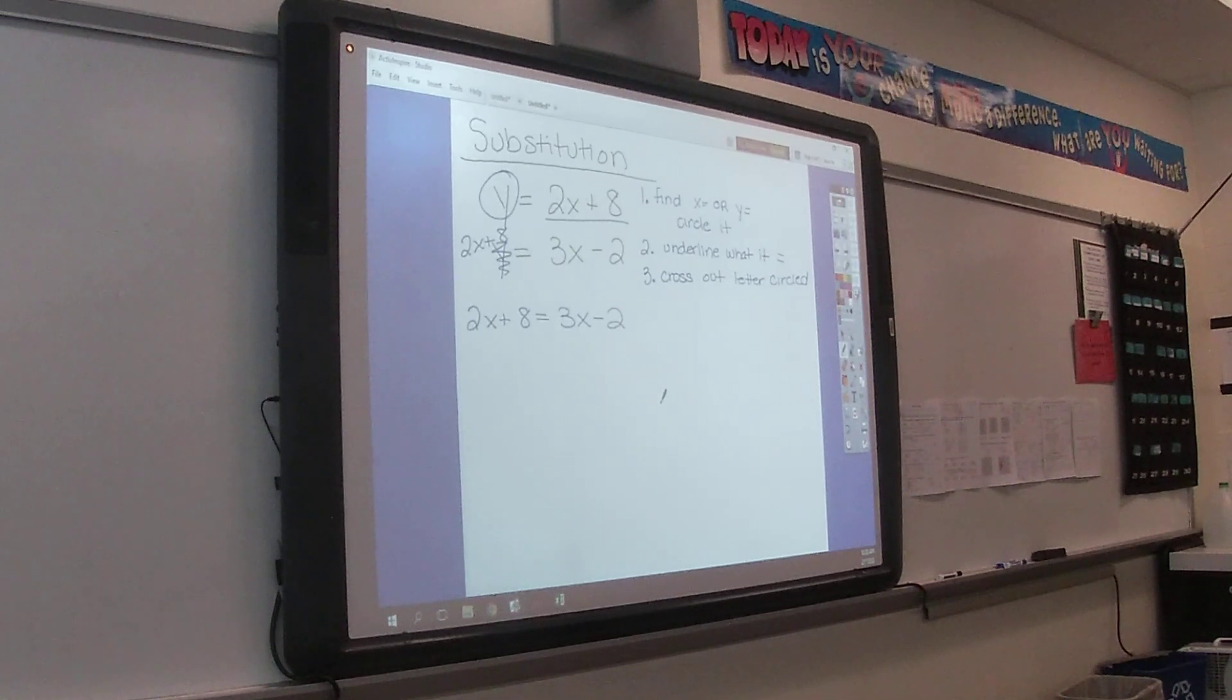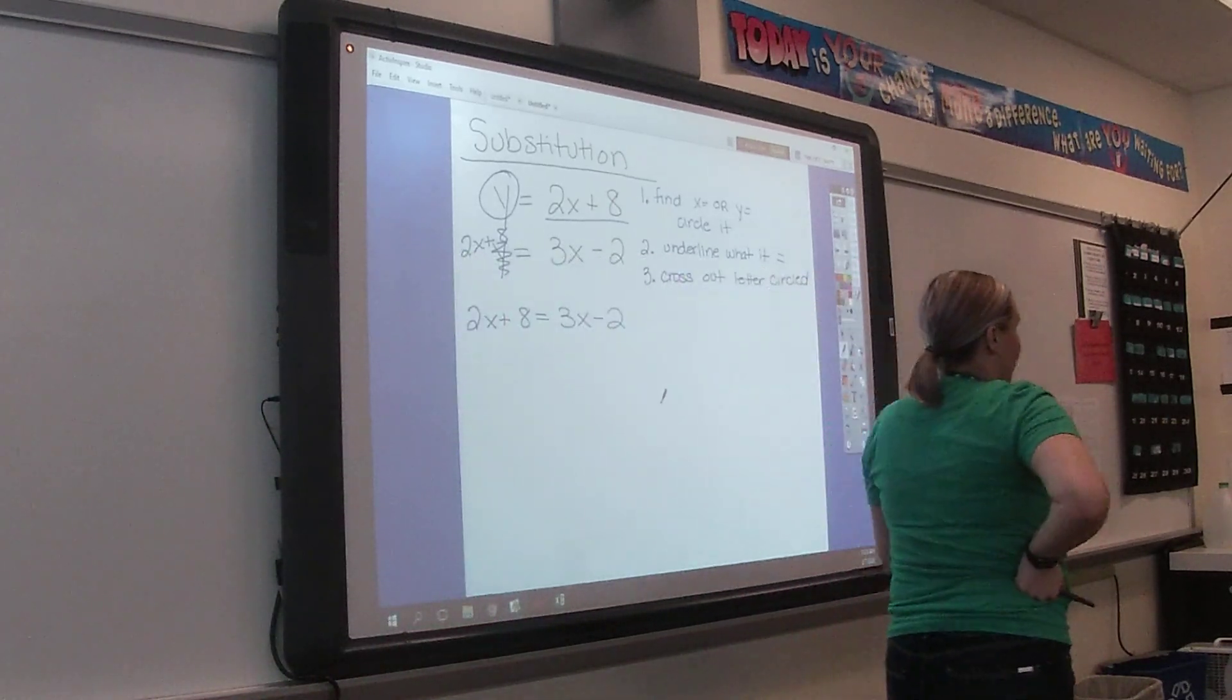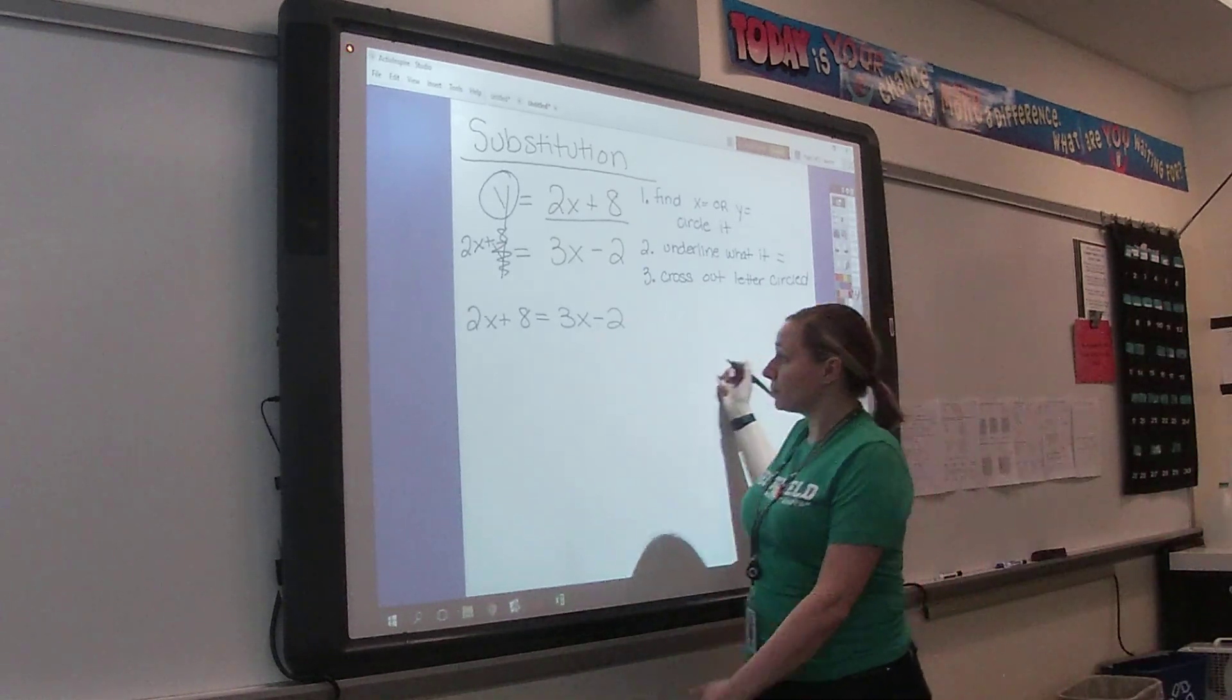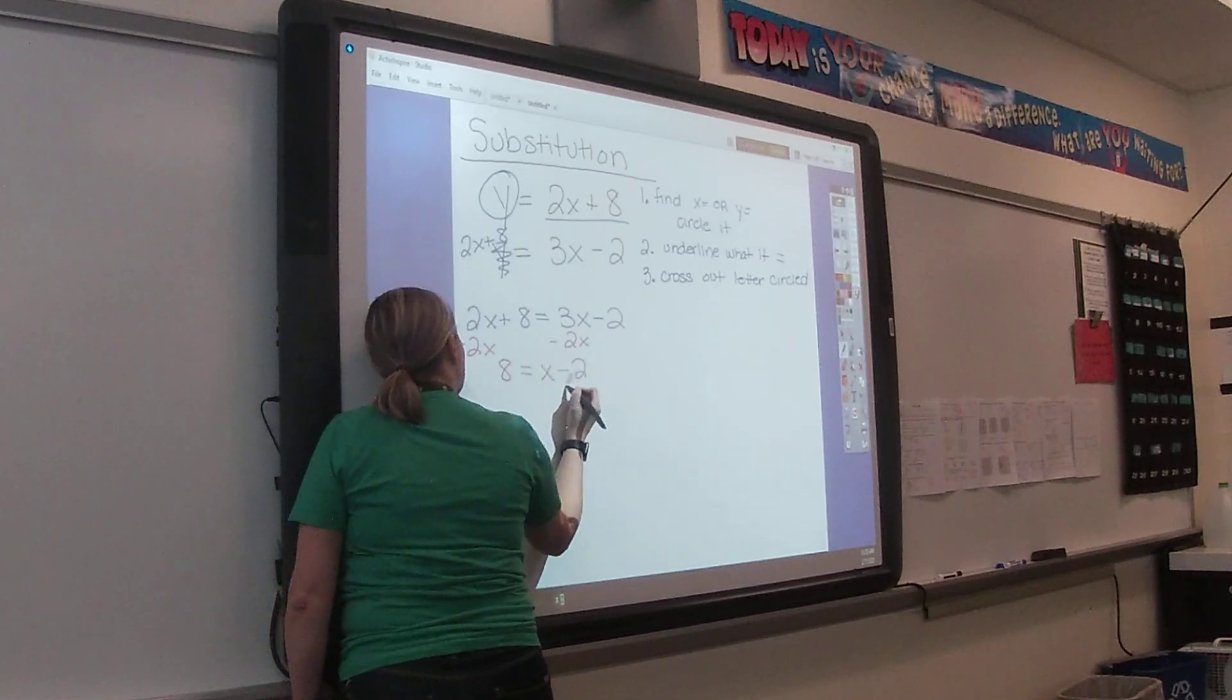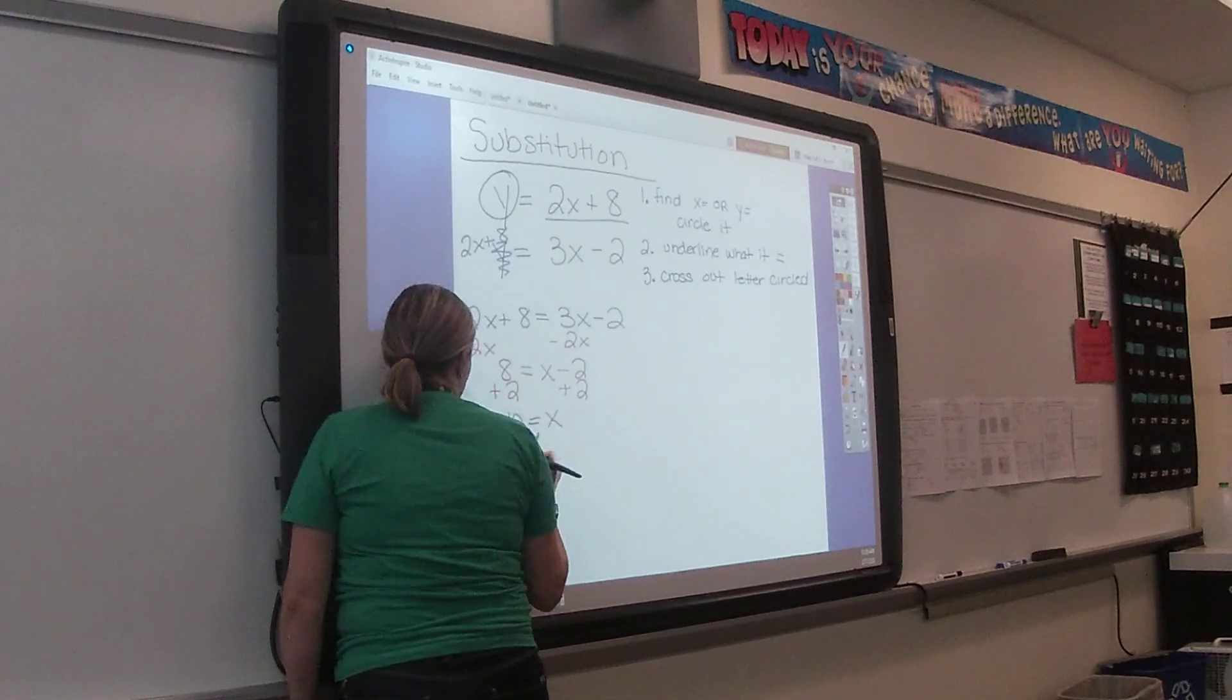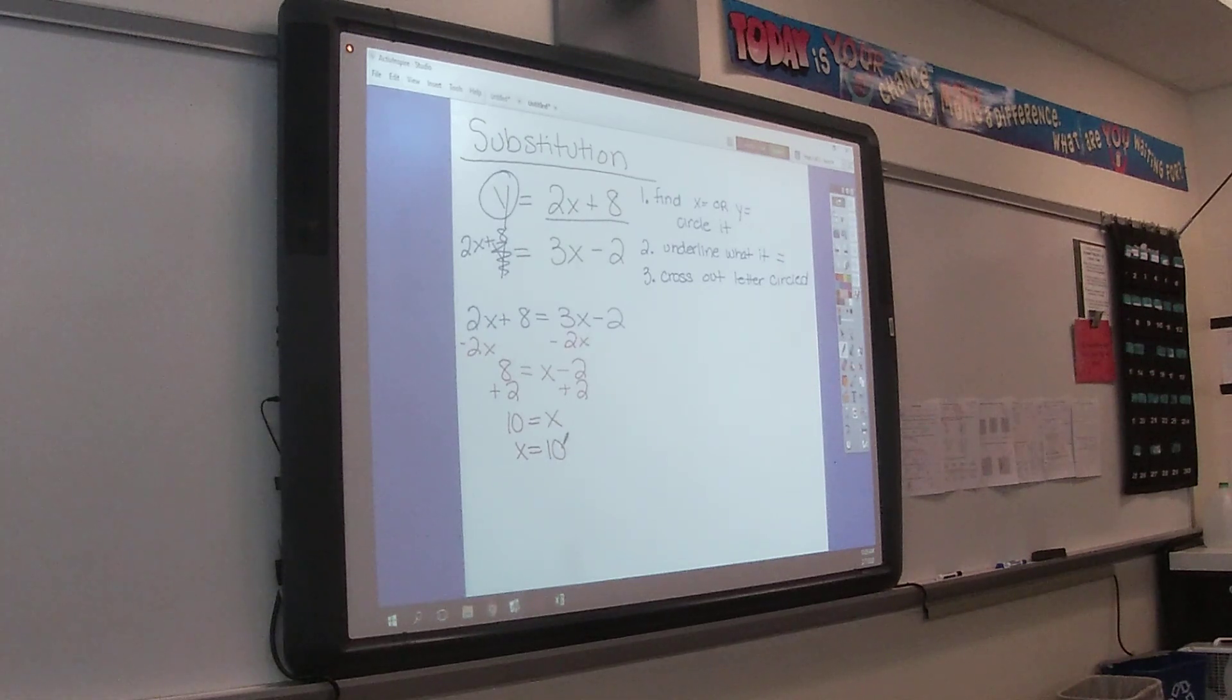And so now we have a new equation that says 2X plus 8 equals 3X minus 2. So now we need to solve this. 2X and 3X, are they on the same side or opposite sides? Opposite. So if they're on opposite sides, we want to get them together. So when we solve, we get X equals 10.